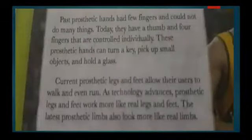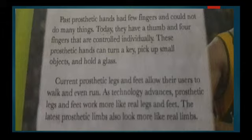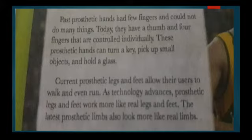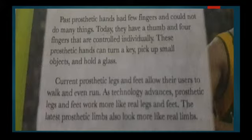Past prosthetic hands had few fingers and could not do many things. Today they have a thumb and four fingers that are controlled individually. These prosthetic hands can turn a key, pick up small objects, and hold a glass. Current prosthetic legs and feet allow their users to walk and even run. As technology advances, prosthetic legs and feet work more like real legs and feet, and the latest prosthetic limbs also look more like real limbs.